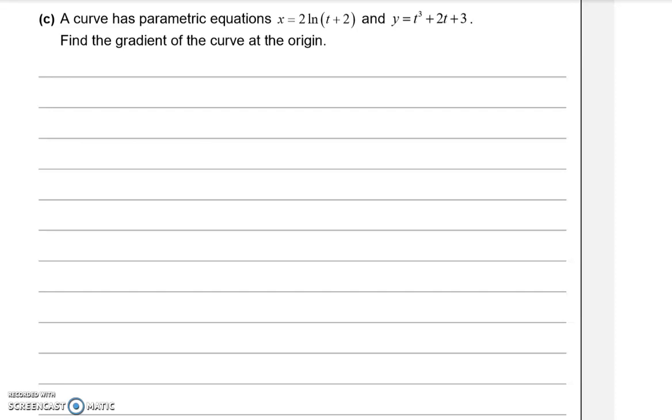We've got parametric equations in this one here. So the first thing that we want to do is differentiate each with respect to T. I'm using notation to specify that it's differentiating X with respect to T so that we can keep our notation clear of what we're doing. So this is 2 ln(t+2). If we differentiate that, we get 2 over t+2. And if we differentiate Y with respect to T, we get 3t squared plus 2.